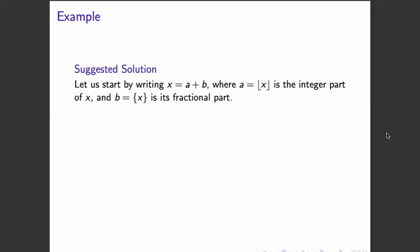So let us start by writing X as the sum of its integer part and its fractional part. So we can let A and B be those parts respectively. If we do that, we will be able to rewrite the original equation